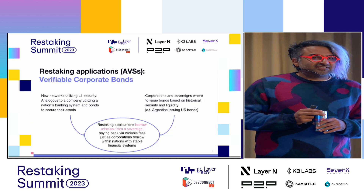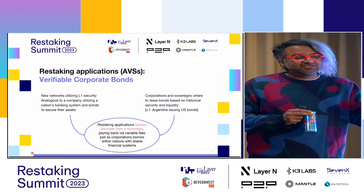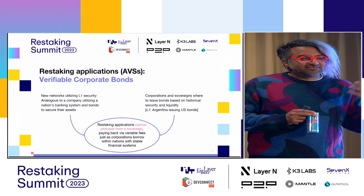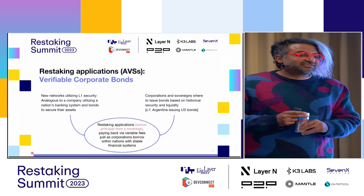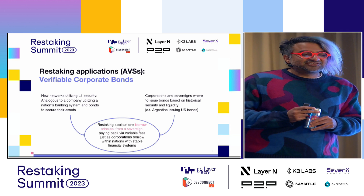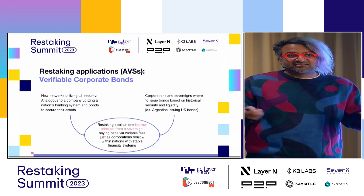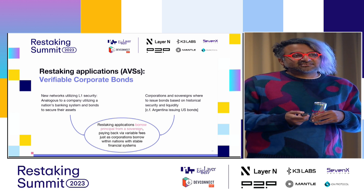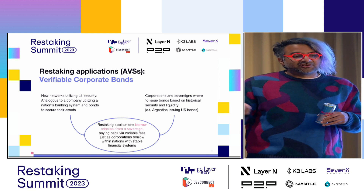I would argue that restaking applications and AVSs are, at some level, verifiable corporate bonds. New networks want to get L1 security — in some sense this is analogous to a company, or even another nation state, using a nation's financial system and issuing bonds against that to secure their assets. Corporations and sovereigns issue bonds based on places with the highest security and liquidity. Argentina, held hostage by investors for 10 years, still issues dollar-denominated bonds because it has the most liquidity. We can think of ETH L1 as issuing a sovereign currency, and restaking applications as borrowing from the sovereign and paying back with the variable fees they earn.